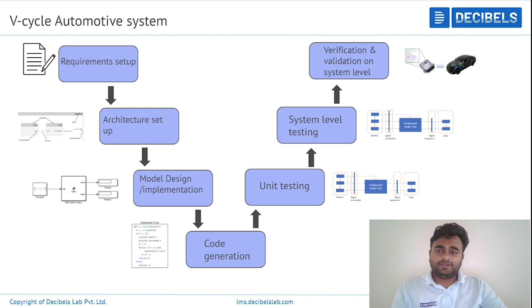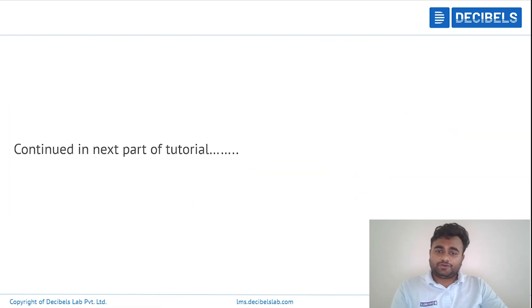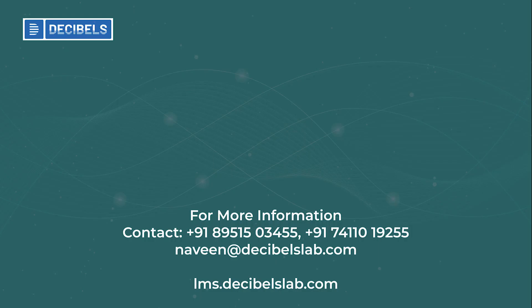Once that is done, you can proceed to deploy it to the real hardware. This is an overview of the V-model and how it is followed in automotive software development. In the next part of the tutorial, we will continue with understanding more about the requirement setup. Thank you.